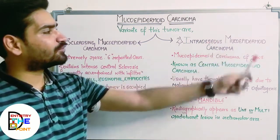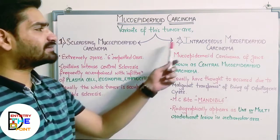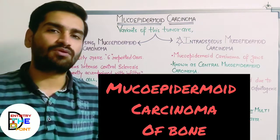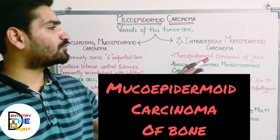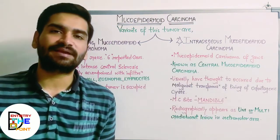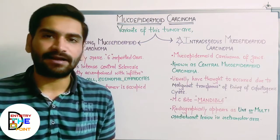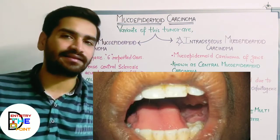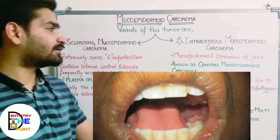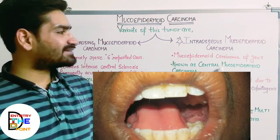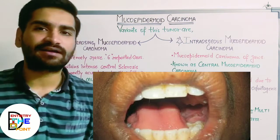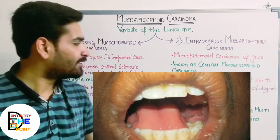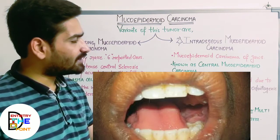The second variant is intraosseous mucoepidermoid carcinoma. As the name suggests, it is mucoepidermoid carcinoma of bone — specifically of the jaws. It mainly affects the mandible, in the retromolar area, that is the area of the molars. It is also known as central mucoepidermoid carcinoma.